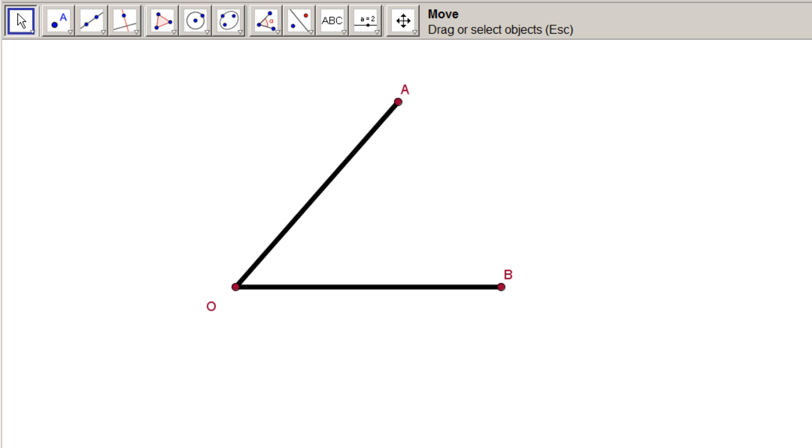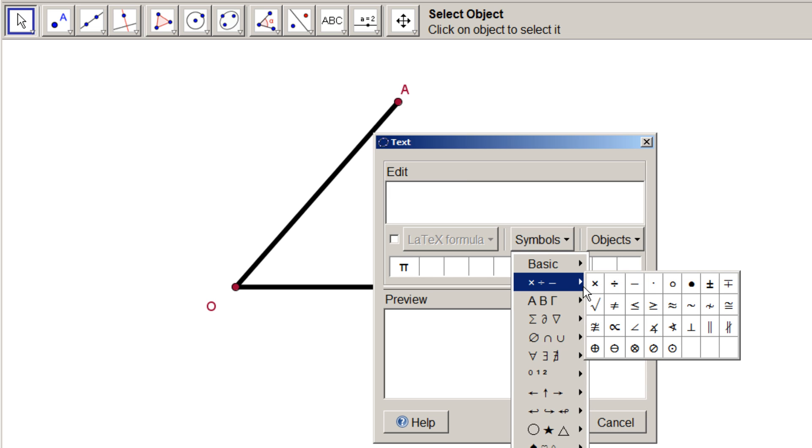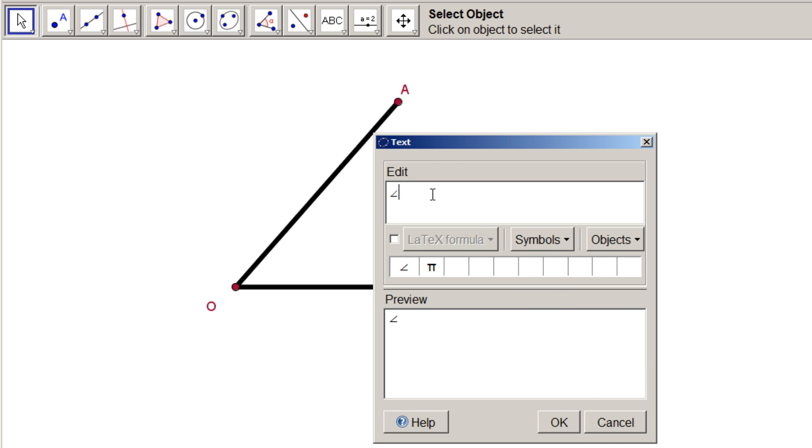Go to the Tool menu again. Click on the text icon. That's the one with the letters ABC on it. Click inside the angle diagram. A text dialog box is displayed. First choose Symbols, then the second choice down, Times Divide Minus. Select the symbol for Angle, like in italic capital L. Now type A or B in the edit box. Press OK.